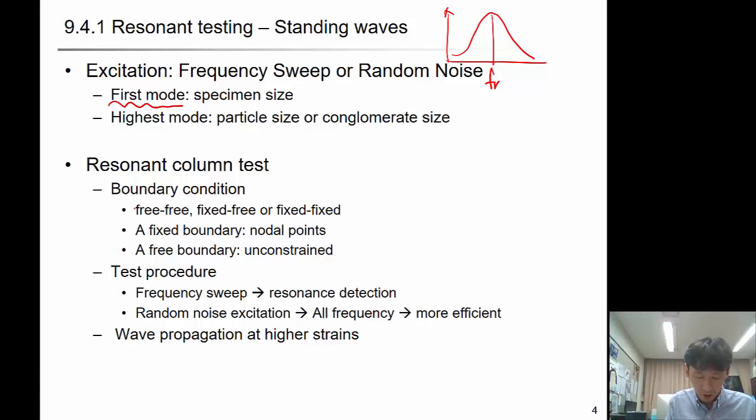The highest mode will be limited by particle size and conglomerate size. In resonant column test, boundary condition can be different: free-free, fixed-free, and fixed-fixed. A fixed boundary is called the nodal point and a free boundary is unconstrained end. Frequency sweep is typically used to detect resonance and random noise excitation can also be used.